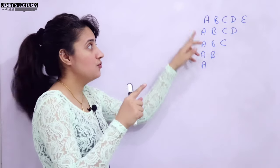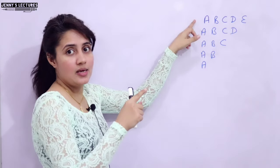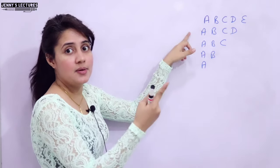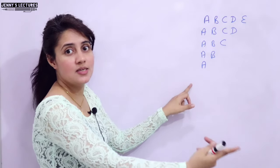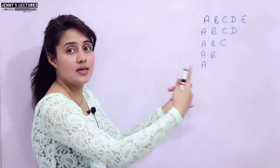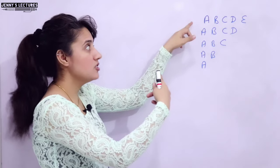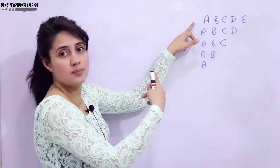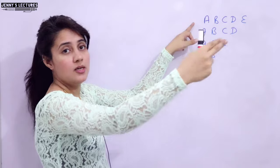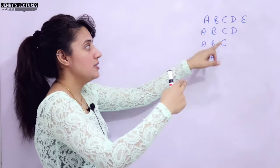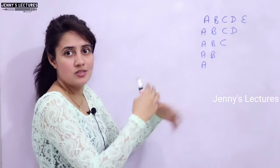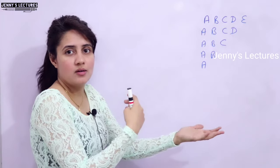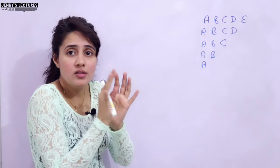In the previous video, we discussed: first line A, second line AB, then ABC, then ABCD and ABCDE. But here, in the first line we are printing ABCDE, then ABCD, then ABC — like this. So it is the reverse of that. You have to change a little bit.